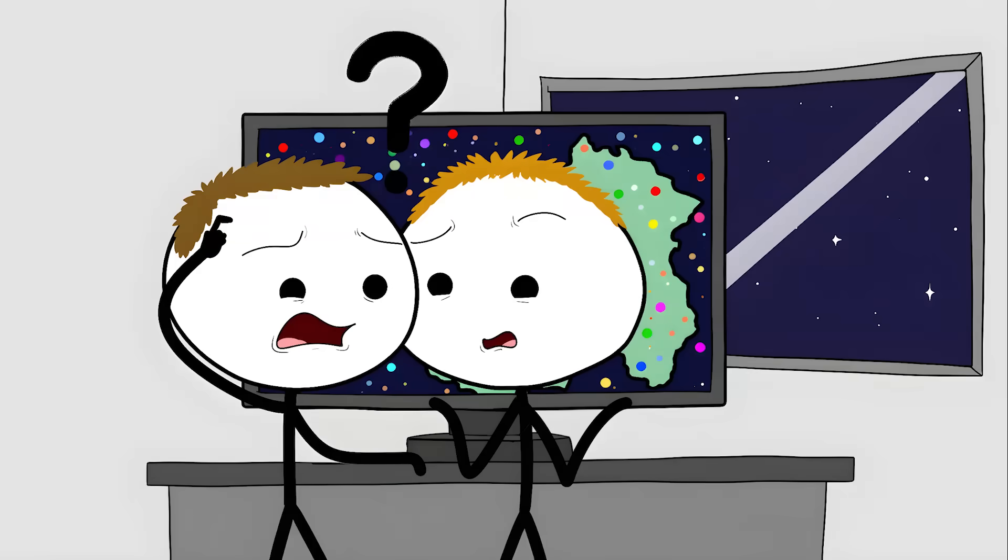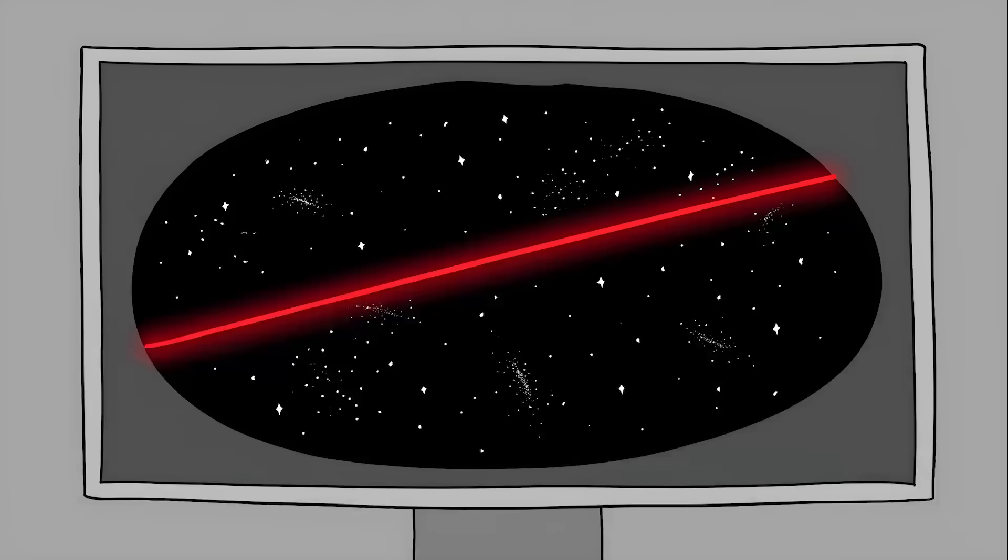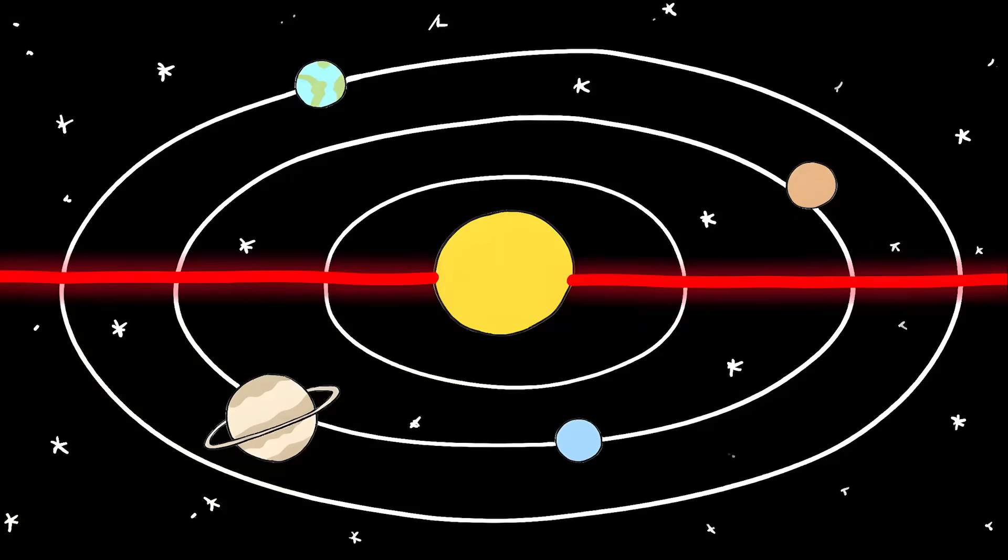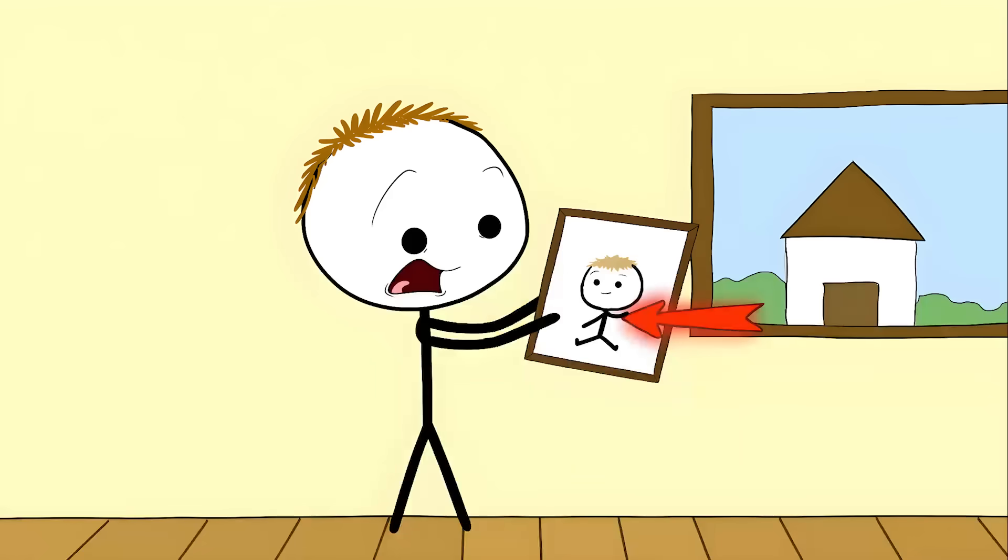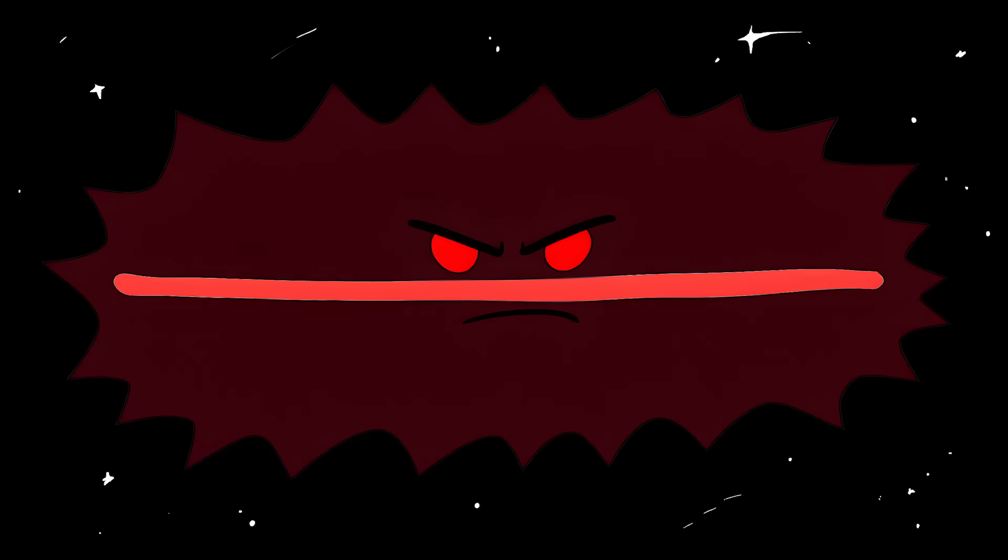But when scientists actually looked at this picture, they found something weird. There's this mysterious alignment of temperature patterns that shouldn't be there, and these patterns line up perfectly with our solar system's plane. It's like finding out that your random baby photo has a hidden message pointing directly to your current address.